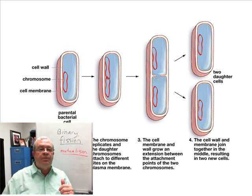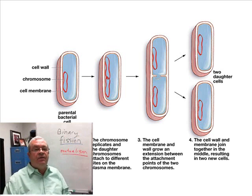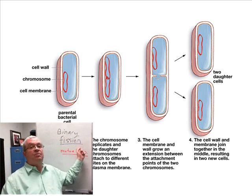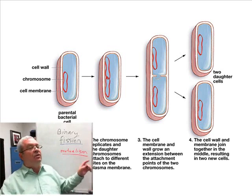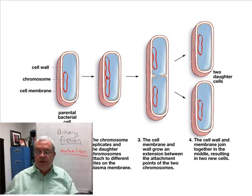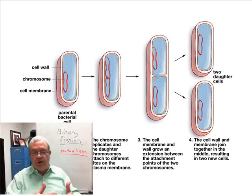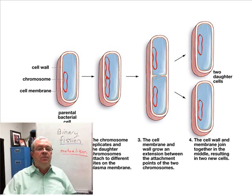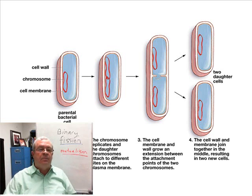What has to happen for a bacteria cell to divide, and how do they divide? The process is extremely simple. The term is binary fission. Binary means into, fission means splitting. Bacteria cells don't do meiosis, they don't do mitosis. They do something very simple called binary fission, illustrated here in this diagram. The one circular chromosome has to become two circles, and the cell needs to split into two daughter cells, each with its own chromosome. The one circular chromosome becomes two, and the bacteria cell splits in two.